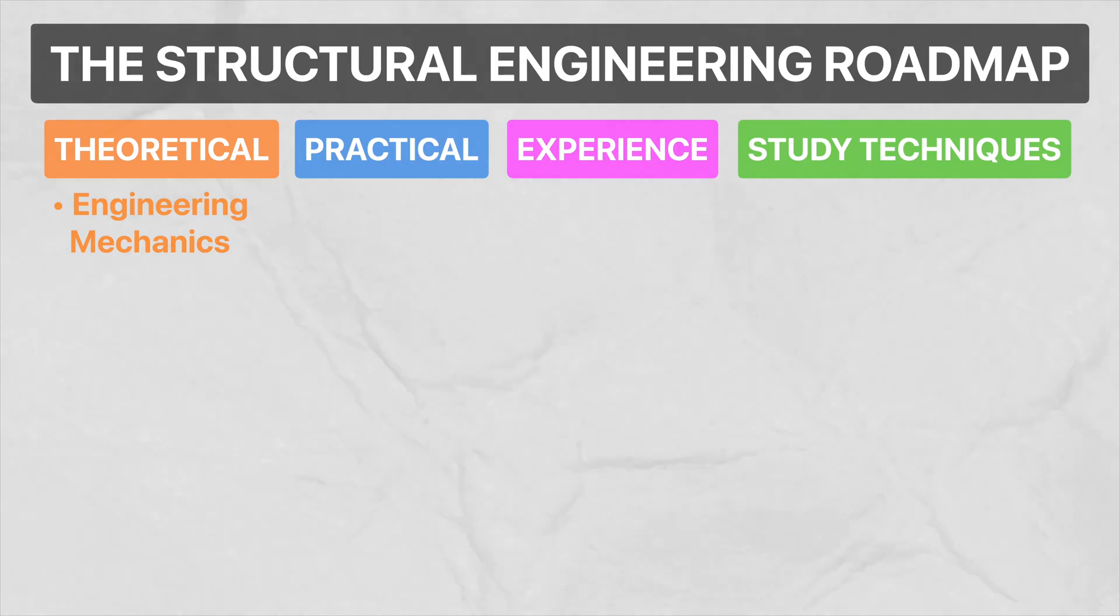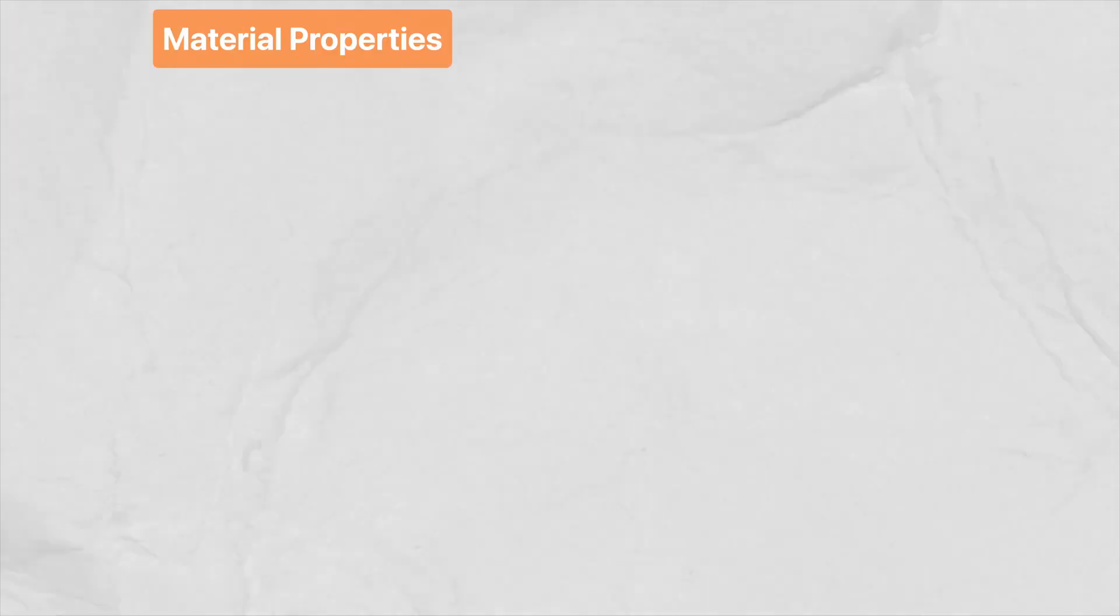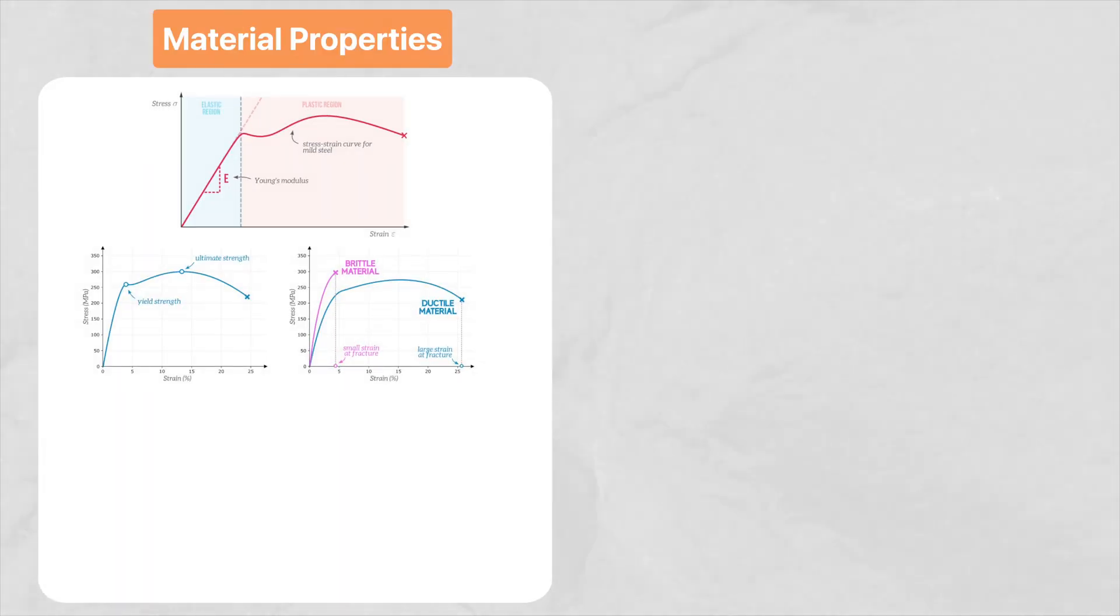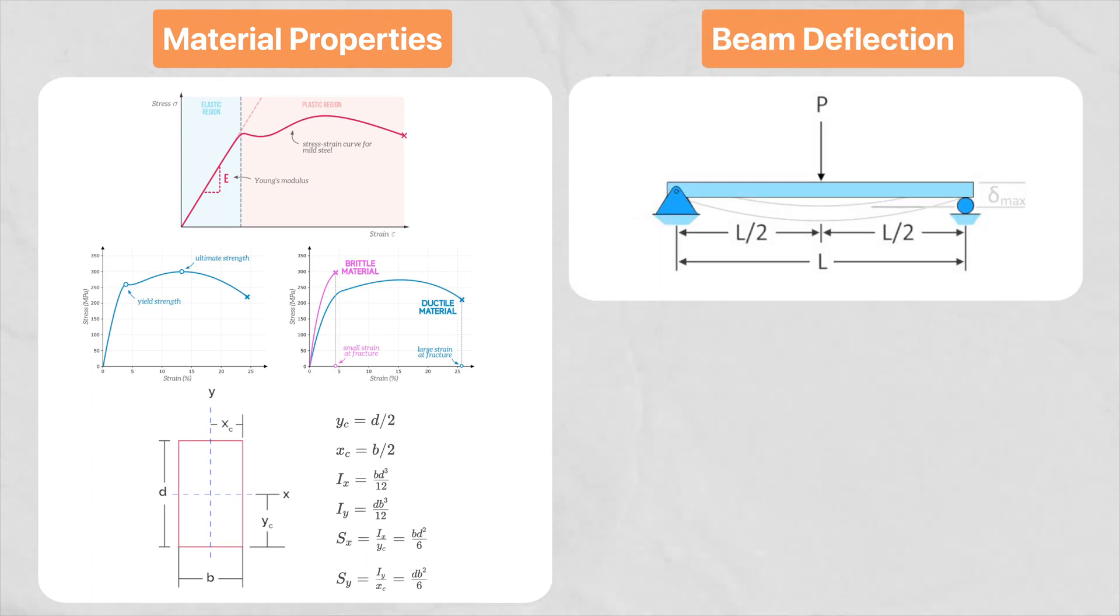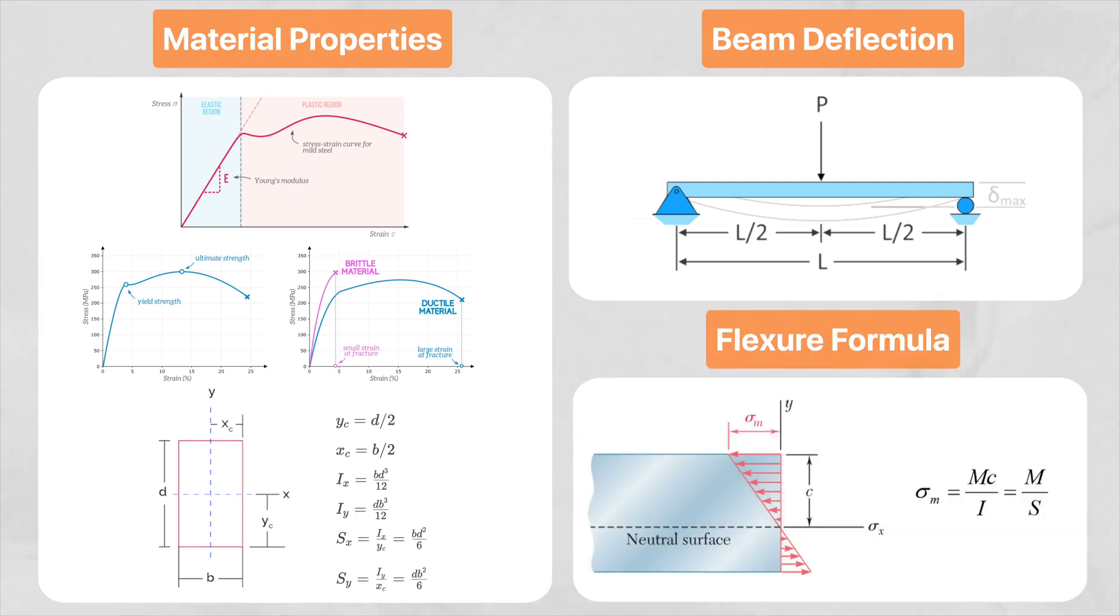Okay, and next on the list is mechanics and materials, and similar to engineering mechanics, this is all about mastering the fundamentals. Here, I would spend my time learning about material properties like the modulus of elasticity and how to calculate the section modulus. I would also spend my time understanding beam deflection and what factors affect how much a beam deflects. And finally, I would learn about how the flexure formula works.